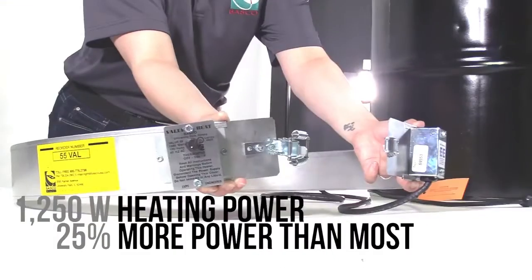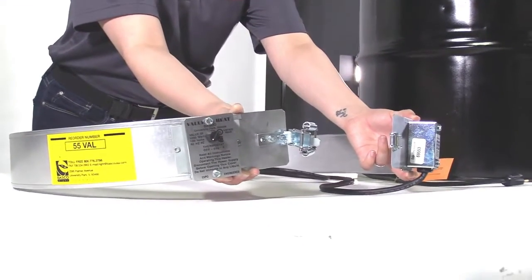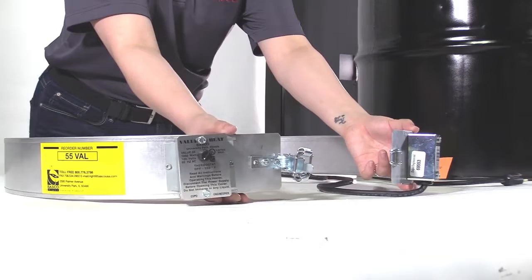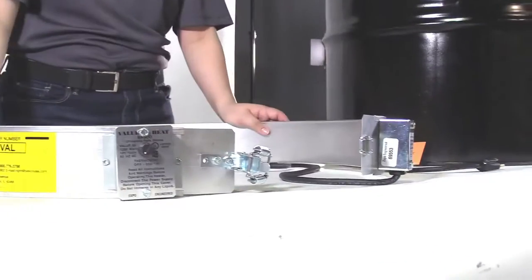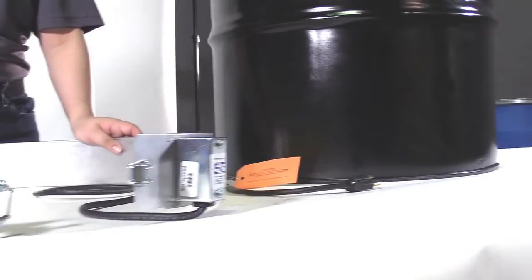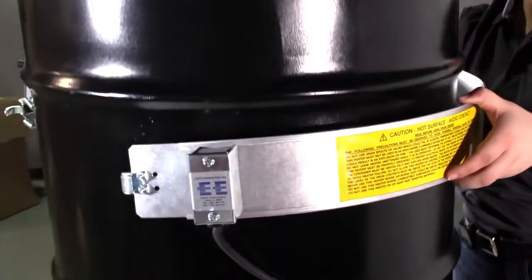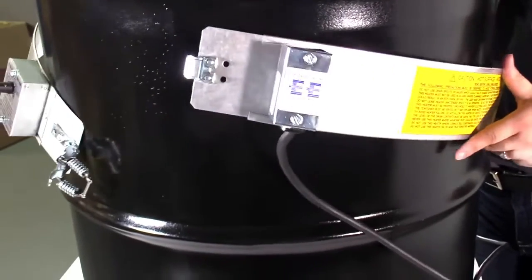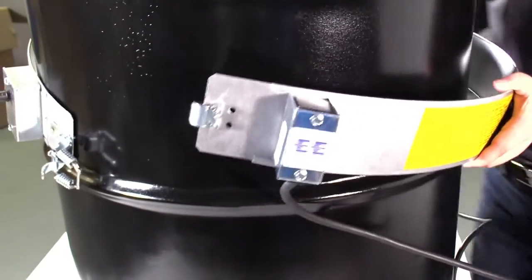The next heater to check out is this ValueLine electric drum heater with thermostat control for 55 gallon drums. It is three-quarter inch wide and delivers up to 1250 watts of dependable heating power. In case you didn't realize how awesome that is, that's 25 percent more power than other heaters in its price class.